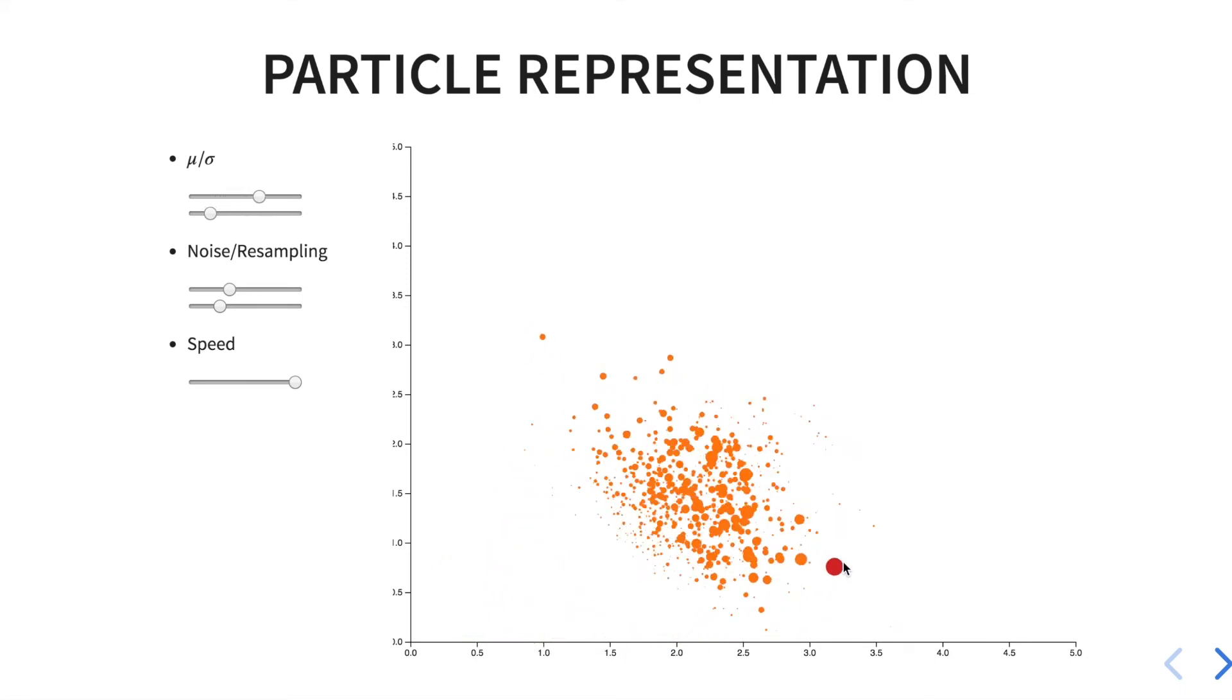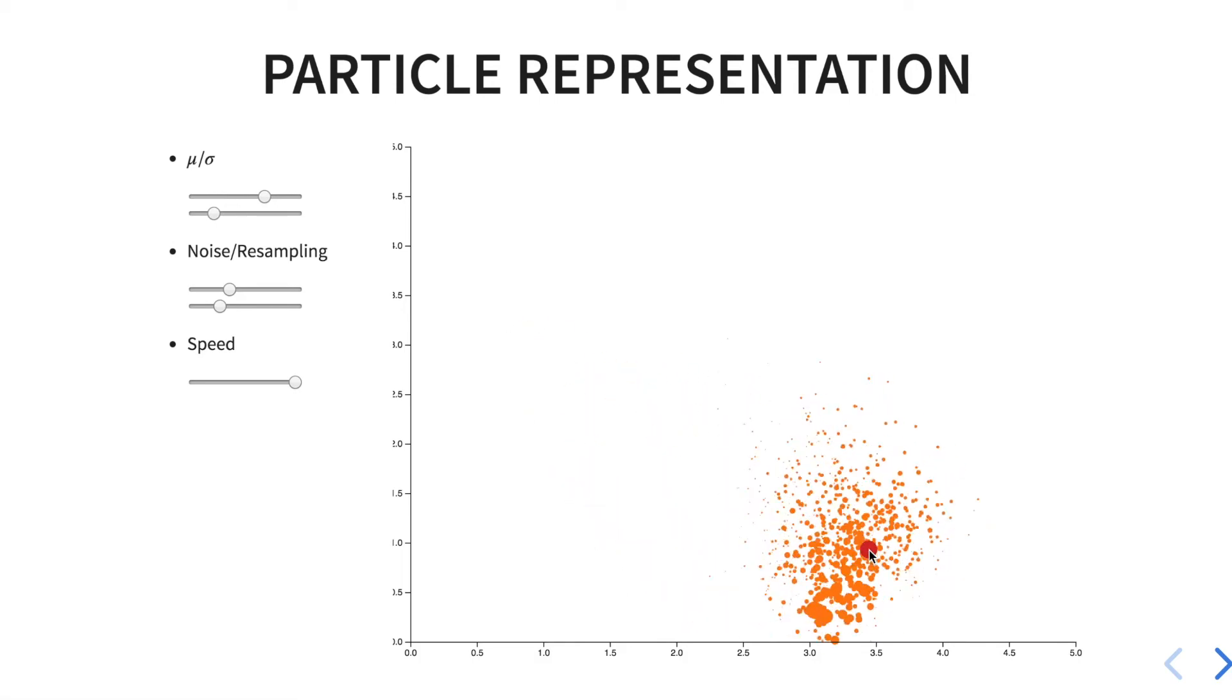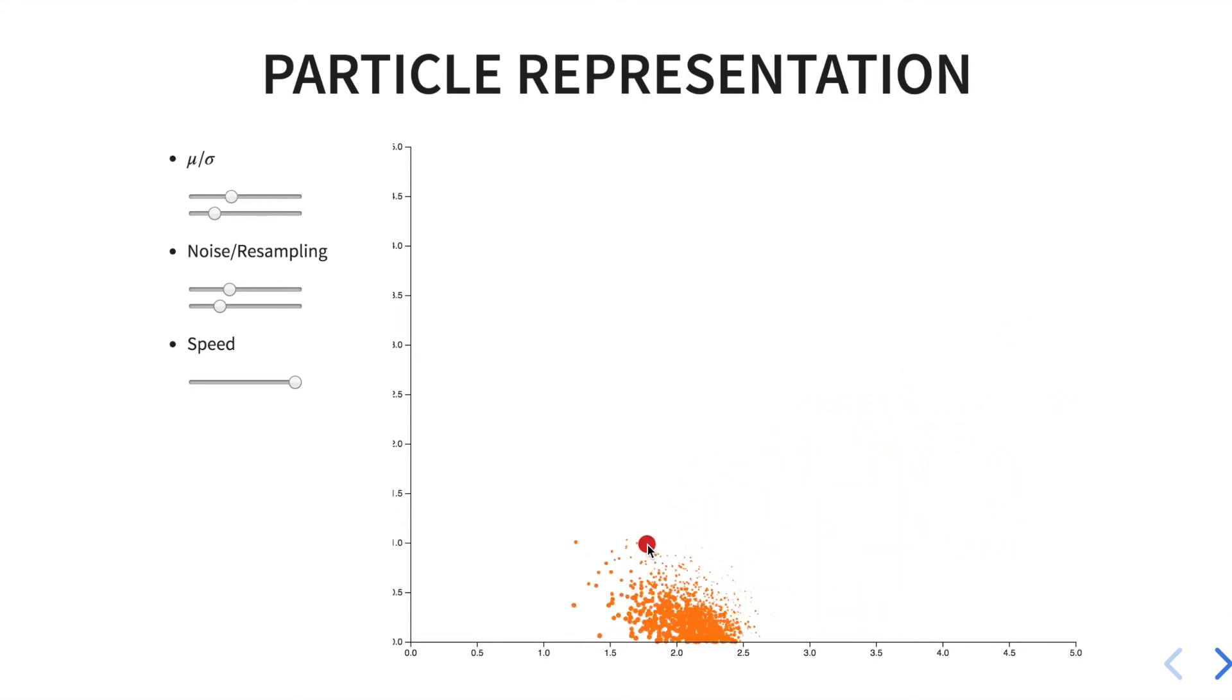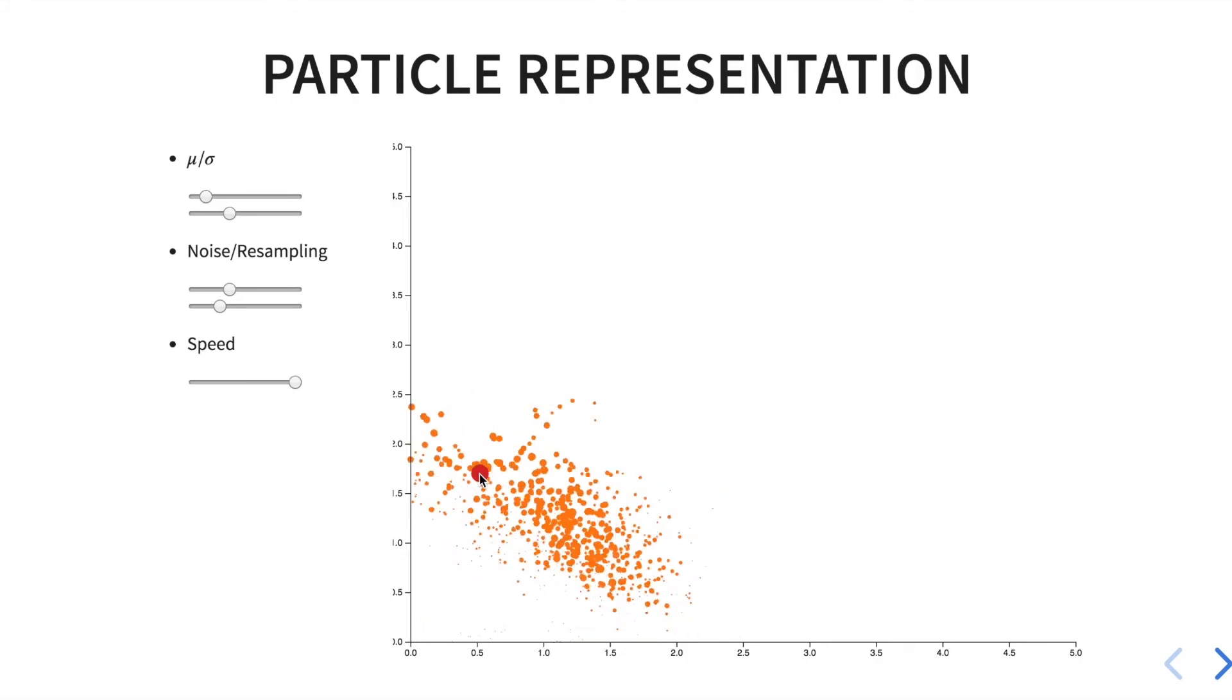Here you can see a representation of the different particles that represent the distribution of the parameters of the opponent. As the opponent gets different parameters, the particle filter adapts and allows us to play optimal strategy.